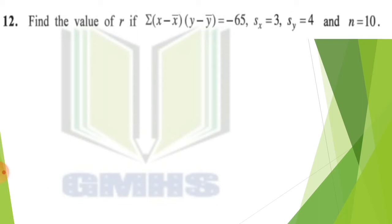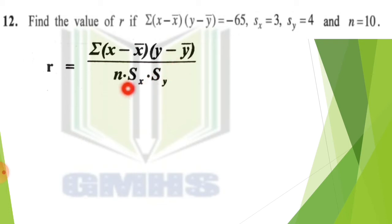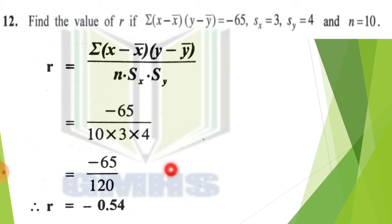This is the second formula. If you have given the values, then you can put all the values in this formula. So first of all, sigma X minus X bar into Y minus Y bar, which is divided by N into S of X into S of Y. Just divide here, values put out, and you can see simplification is done. If you have doubts, then you will comment and ask. Our answer is minus 0.54 R value.